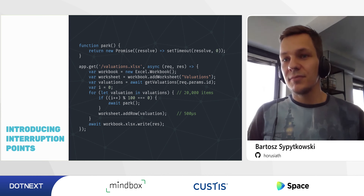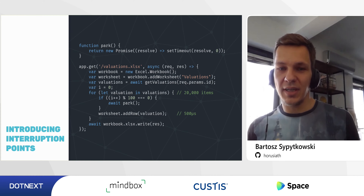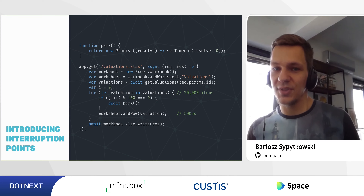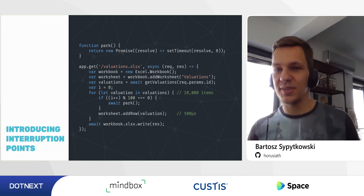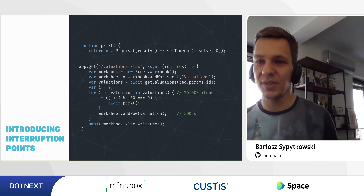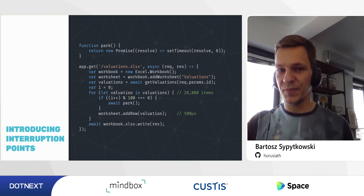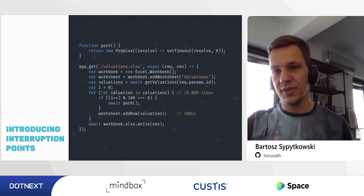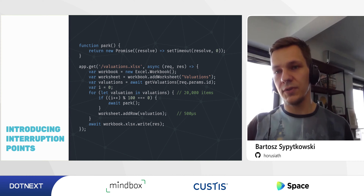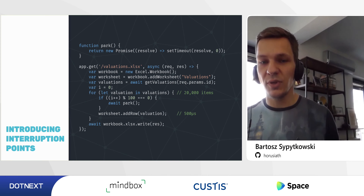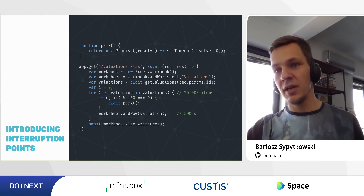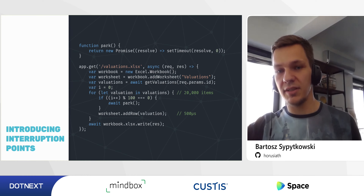A workaround for cooperative schedulers is to introduce an await step every 100 items processed. In Node.js this uses setTimeout with zero delay, which takes the next piece of code and schedules it on the event loop's job queue. This introduces an interruption point inside the for loop, giving the Node.js event loop the ability to intervene when the code is taking too long.